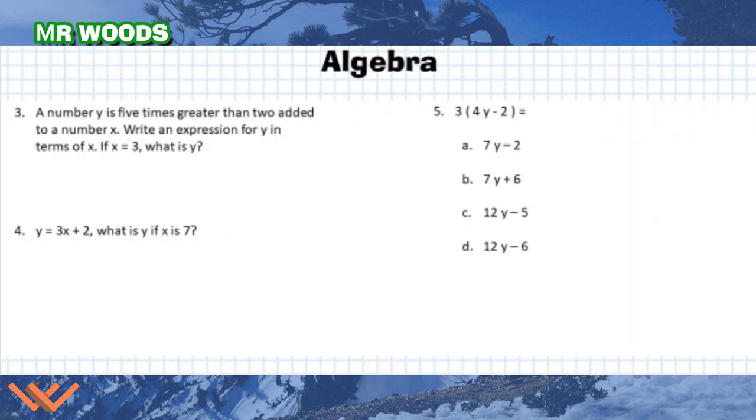Number 3. A number y is 5 times greater than 2 added to a number x. Write an expression for y in terms of x. If x is equal to 3, what is y? We have a couple of steps to do here. So we need to interpret this. The number y is 5 times greater than 2 added to a number. So I'm going to say y is 5 times, then 2 added to a number. So I can say here's my number plus 2. So it's 5 times greater than this here.